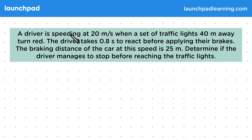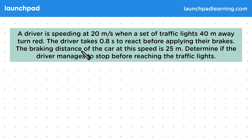A driver is speeding at 20 metres per second when a set of traffic lights 40 metres away turn red. The driver takes 0.8 seconds to react before applying their brakes. The braking distance of the car at this speed is 25 metres.